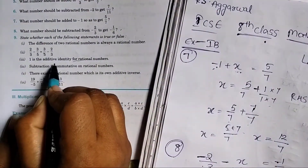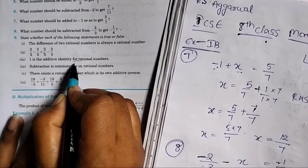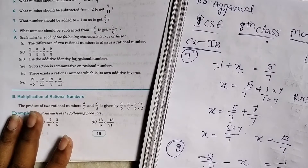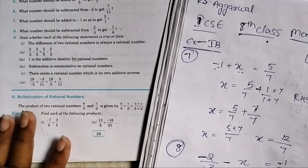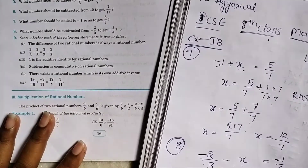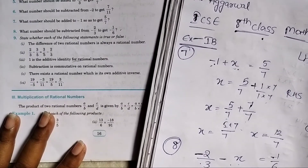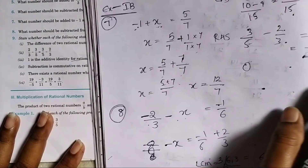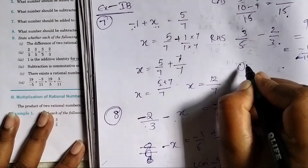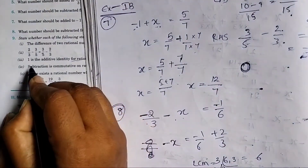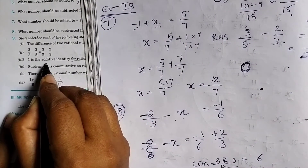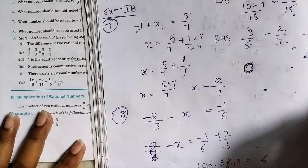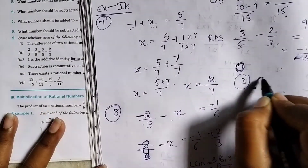Third statement: 1 is the additive identity for rational numbers. But the additive identity is 0, not 1. The multiplicative identity is 1. Since additive identity is not equal to 1, the third statement is false.